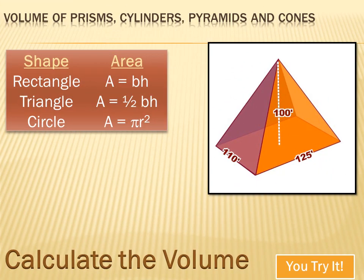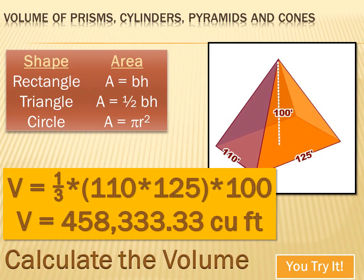This time we've got a pyramid, and it's only got one base and comes to a point at the other end. So the volume formula is one-third the area of the base times the height. So the volume equals one-third times 110 times 125 times the height, or 100. And that totals a massive 458,333 cubic feet.